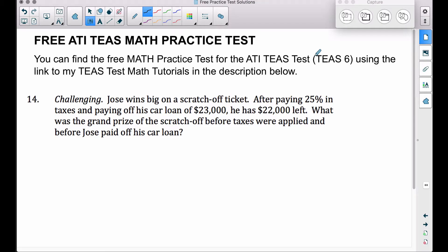All right, in this video we're going to look at problem number 14 on the free ATI TEAS math practice test that I have posted over at www.bcraftmath.com. This is one of those challenging problems. Jose wins big on a scratch-off ticket. After paying 25% in taxes and paying off his car loan of $23,000, he has $22,000 left.